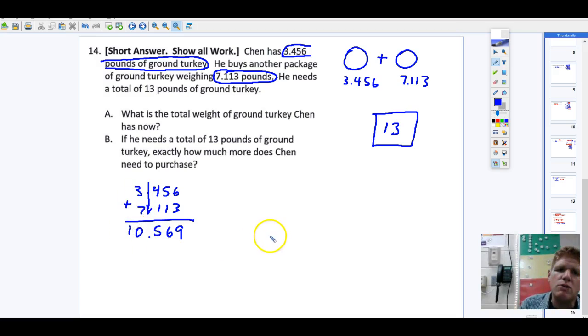3 plus 7 is 10, there you go. So, 10.569, and that is the total weight of ground turkey Chen has now. So, for letter A, Chen has a total of 10.569 pounds—that's an abbreviation, LB—pounds of turkey.